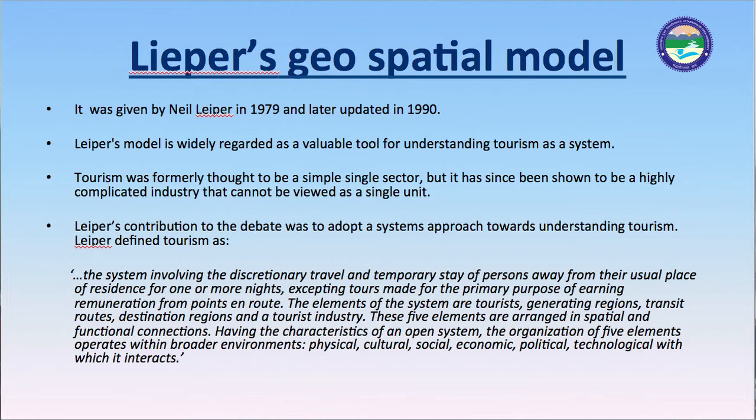The various theories and models were given by known pioneers of tourism. Leiper's Geospatial Model was given by Neil Leiper in 1979 and later updated in 1990. It is widely regarded as a valuable tool for understanding tourism as a system. Tourism was formerly thought to be a simple single sector, but it has since been shown to be a highly complicated industry. Leiper's contribution was the adoption of the systems approach towards understanding tourism.